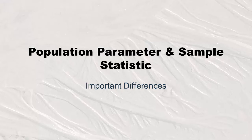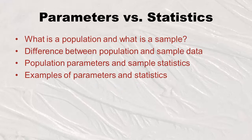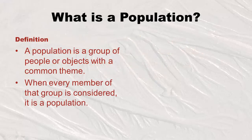Now we're going to talk about what a population parameter is and what a sample statistic is. We'll cover the definition of a population, the definition of a sample, and how data about each are different. Then we'll get into parameters and statistics. Population is another case where a normal word has a special meaning in statistics — it's a group of people or objects with a common theme, where every member of that group is considered.